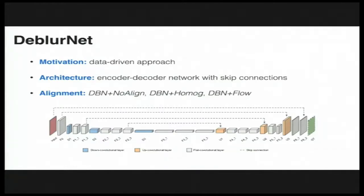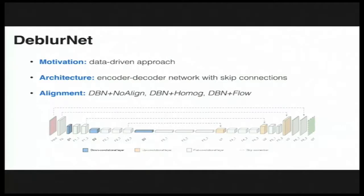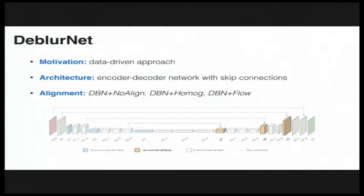Our network consists of three types of convolutional layers: down-convolutional layers, that compress the spatial resolution of the features while increasing the receptive field; flat-convolutional layers, which perform nonlinear mapping and preserve the image size; and finally, up-convolutional layers, that increase the spatial resolution.